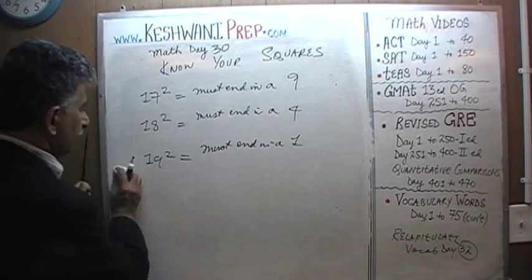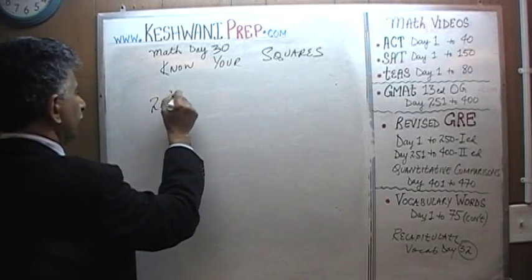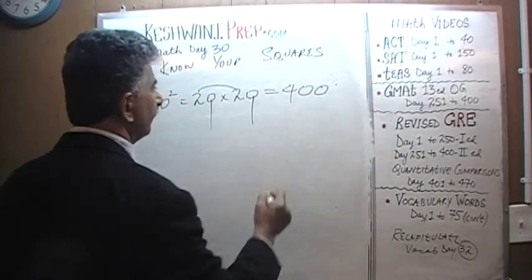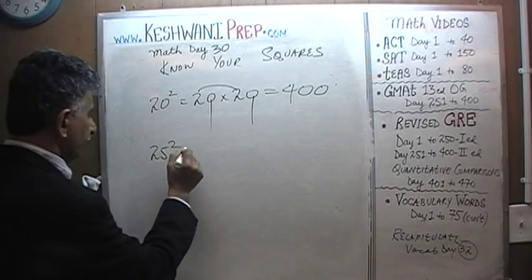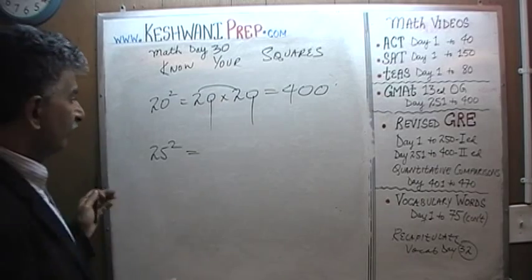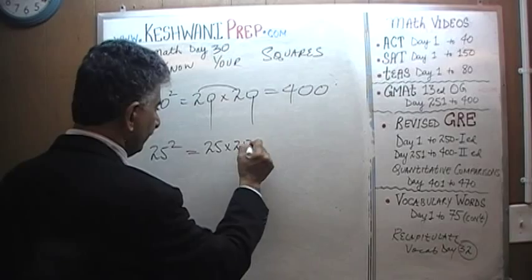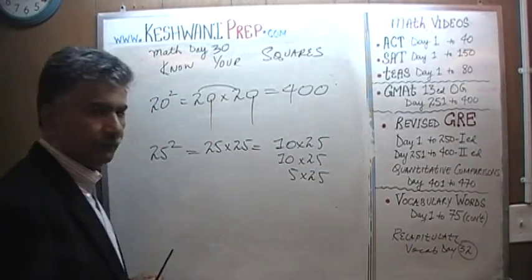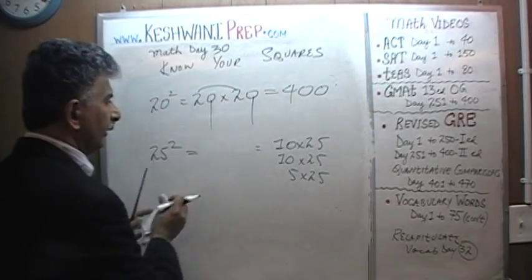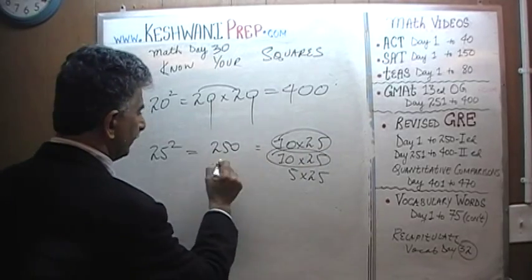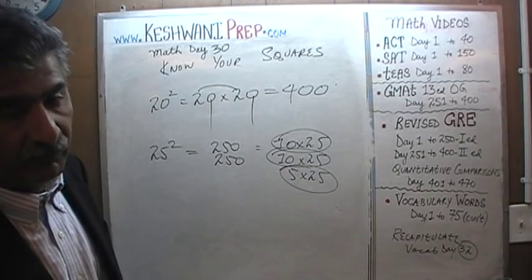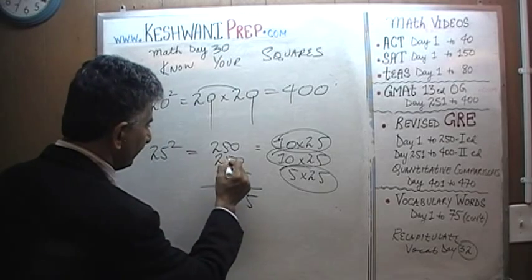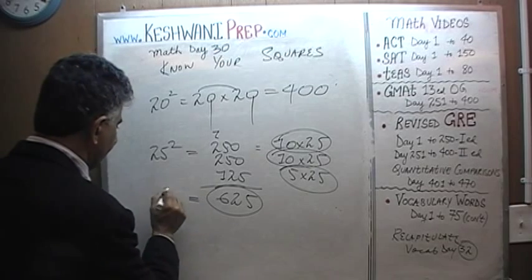What about 20 squared? 20 times 20: 2 times 2 is 4, and then we have two zeros, so it's 400. What about 25 squared? We need 25 twenty-fives. 10 twenty-fives are 250, 10 more twenty-fives are 150 — wait, let me recalculate: 10 twenty-fives are 250, and 5 twenty-fives are half of 250 which is 125. Adding them up gives 625. 25 squared is 625.